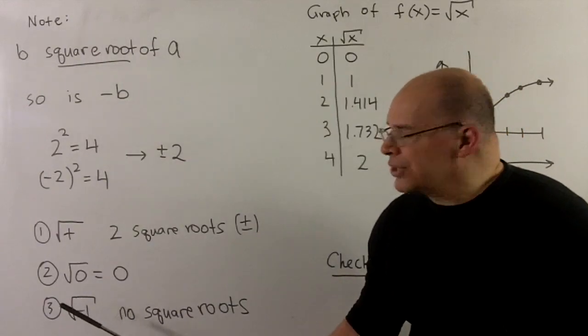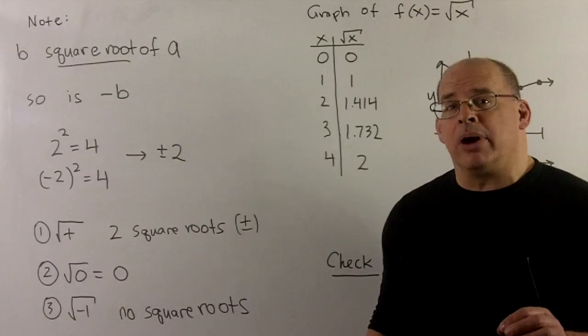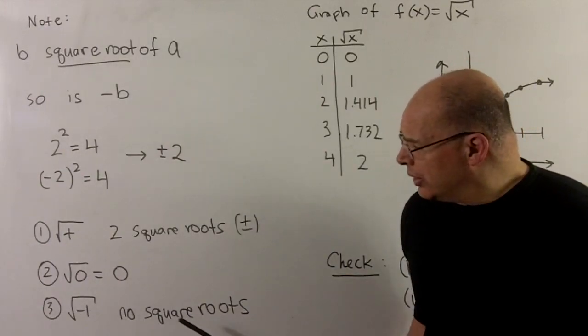Here's a case where we have just one square root. And then for negative numbers, if we're going to work over the real numbers, we get undefined. There will be no square roots for this case.